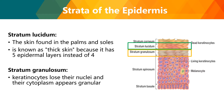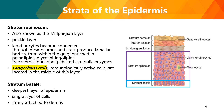Next, the stratum granulosum, where keratinocytes lose their nuclei and cytoplasm appears granular. The next layer is the stratum spinosum, also known as the malpighian or prickle layer. Keratinocytes become connected through desmosomes and start producing lamellar bodies enriched in polar lipids, glycosphingolipids, free sterols, phospholipids, and catabolic enzymes. In this layer you also find Langerhans cells, which are immunologically active cells located in the middle of the spinosum layer and perform a defense function in the skin.